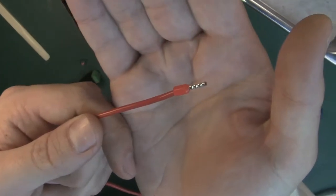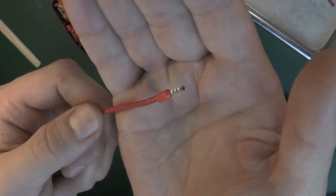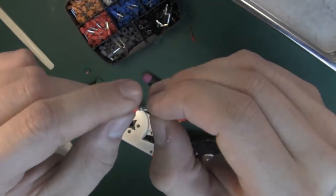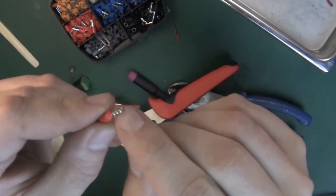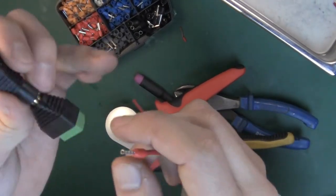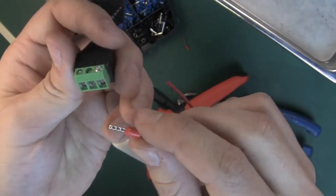That's how it looks after being crimped. You've got a very nice hard place that you can put a screw from the terminal block. So let's try this out.